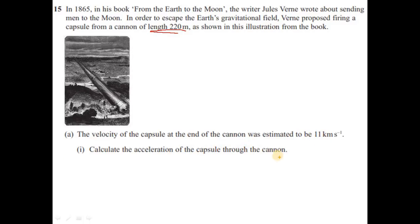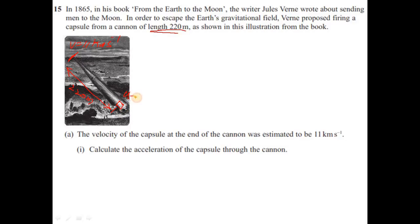Calculate the acceleration of the capsule through the cannon. The starting point is somewhere inside the cannon; the capsule travels all the way through and comes out at the end. The final velocity v at the exit is 11 km/s, the distance traveled through the tube is 220 meters, and the initial velocity u at the start is 0.